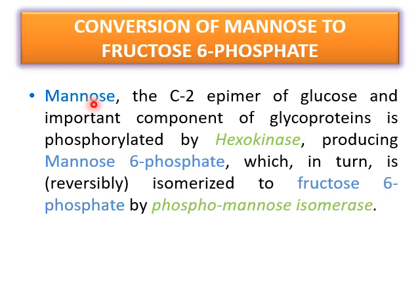Mannose is another monosaccharide, considered the carbon-2 epimer of glucose, and is a key component of glycoproteins expressed on the cell membrane surface. It can be converted into fructose 6-phosphate: first it is phosphorylated by hexokinase to produce mannose 6-phosphate, and then phosphomannose isomerase converts mannose 6-phosphate into fructose 6-phosphate, which can be further metabolized by glycolysis.